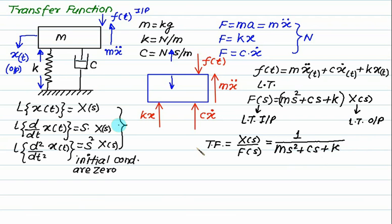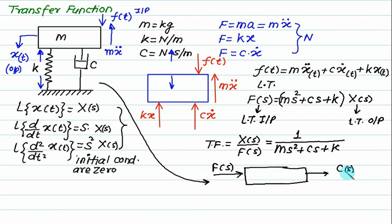What I am discussing is that anybody can see the system on paper. This system equals C(s), and inside is one upon m s square plus c s plus k. So this value multiplied by this is equal to the output.